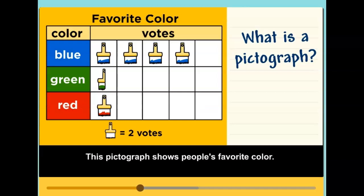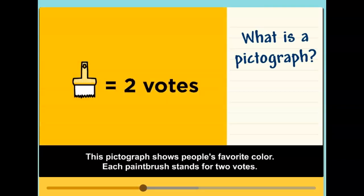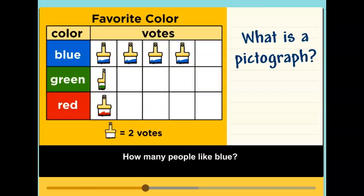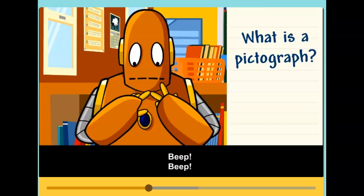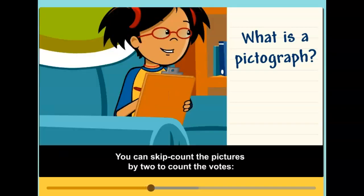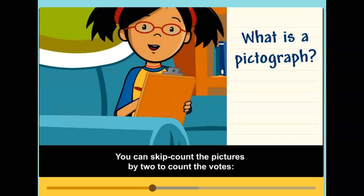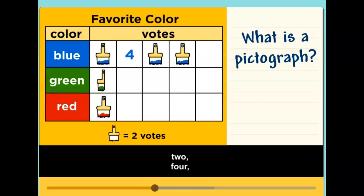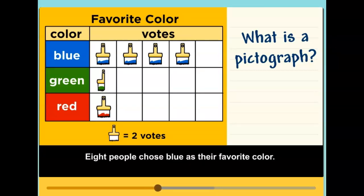This pictograph shows people's favorite color. Each paintbrush stands for two votes. You can skip count the pictures by two to count the votes. Two, four, six, eight. Eight people chose blue as their favorite color.